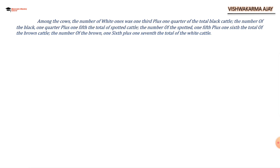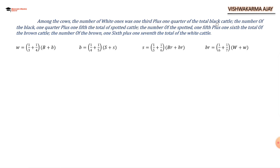Now, among the cows: white cow equals one third plus one quarter of the total black cattle — both bulls and cows, so (1/3 + 1/4)(B + b). Black cow equals (1/4 + 1/5) times total spotted cattle (S + s). Spotted cow equals (1/5 + 1/6) times total brown cattle (Br + br).